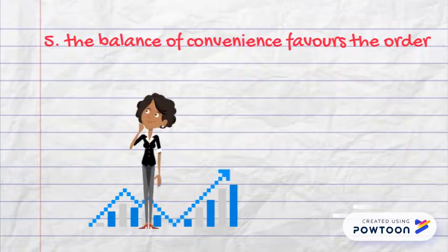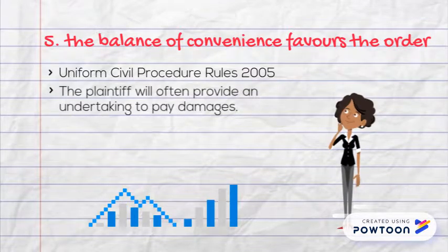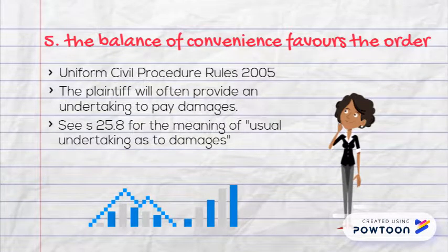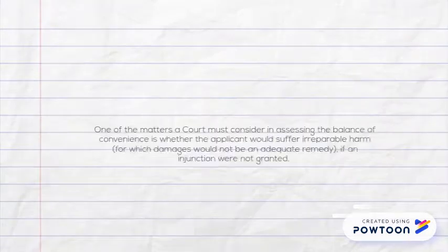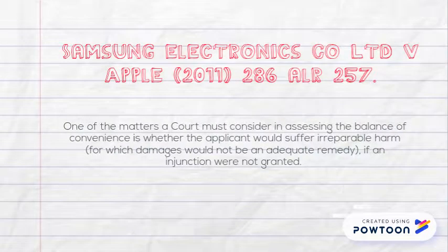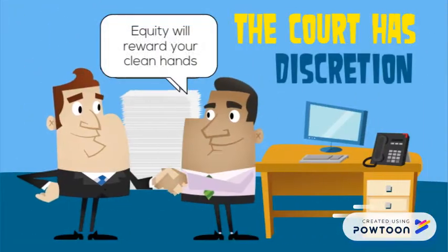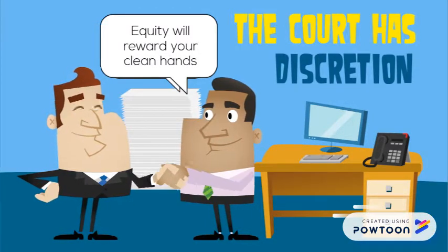Finally, the balance of convenience must favour the order. This requires the court to weigh up the applicant's interests against the defendant's. By some degree, this will be tipped in the plaintiff's favour by providing an undertaking to pay damages incurred by the defendant as a consequence of the injunction if the plaintiff is ultimately unsuccessful at trial. In the case of Samsung Electronics against Apple, one of the matters the court was required to consider in assessing the balance of convenience was whether the applicant would suffer irreparable harm, for which damages would not be an adequate remedy if an injunction were not granted. The court ultimately has discretion in deciding whether to award an injunction, and any delay or conduct by the plaintiff contributing to a lack of clean hands will be relevant to the exercise of that discretion.